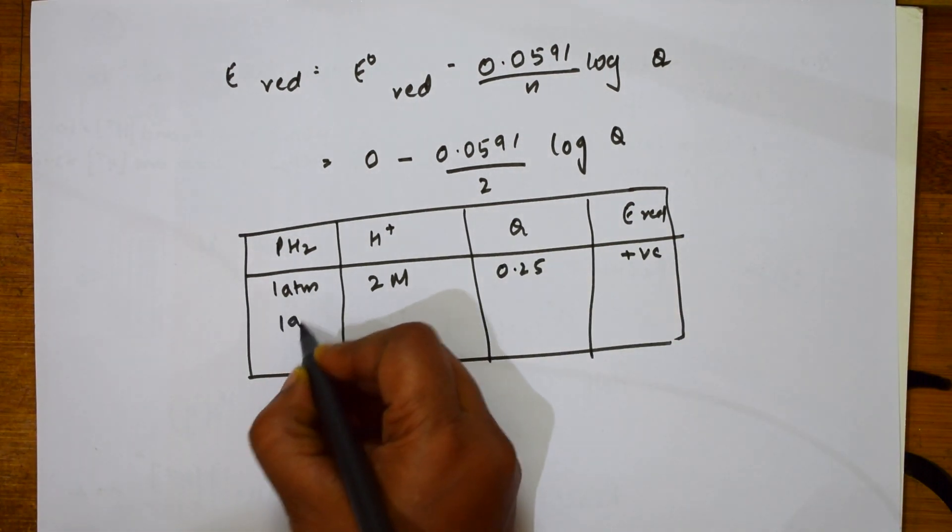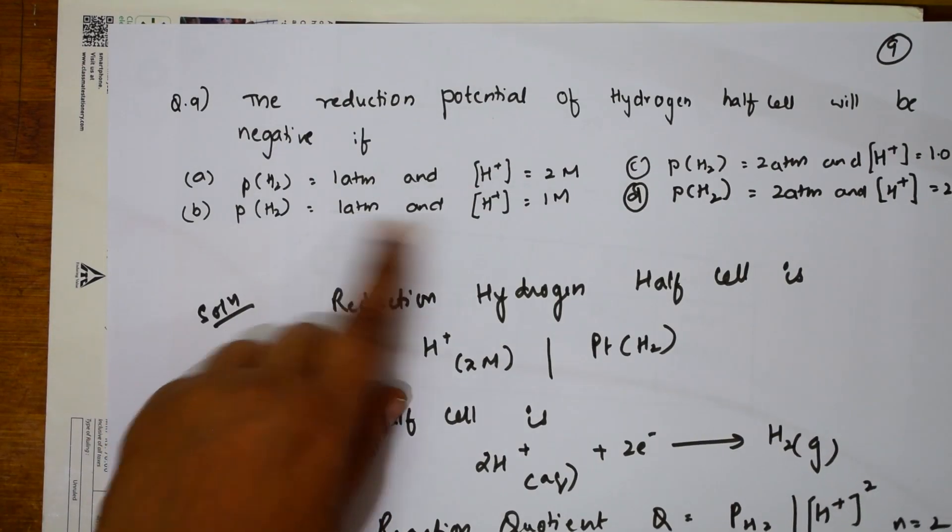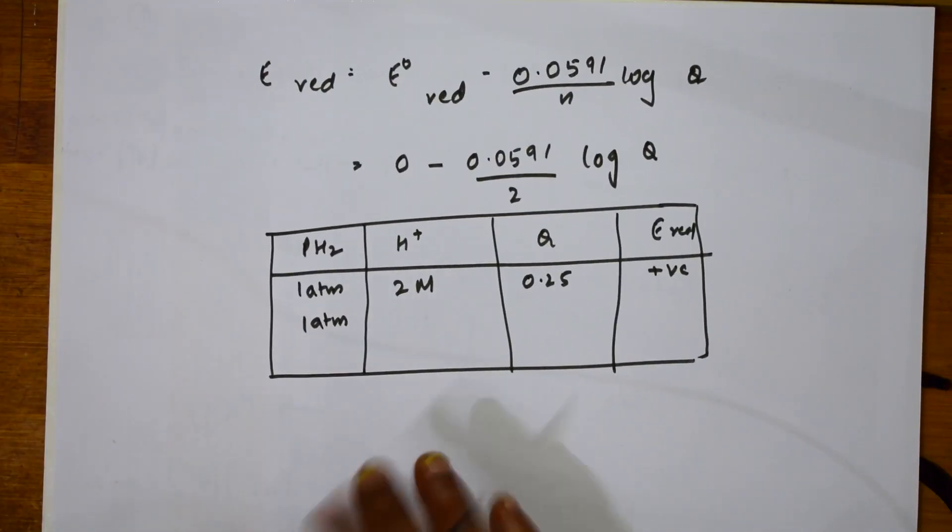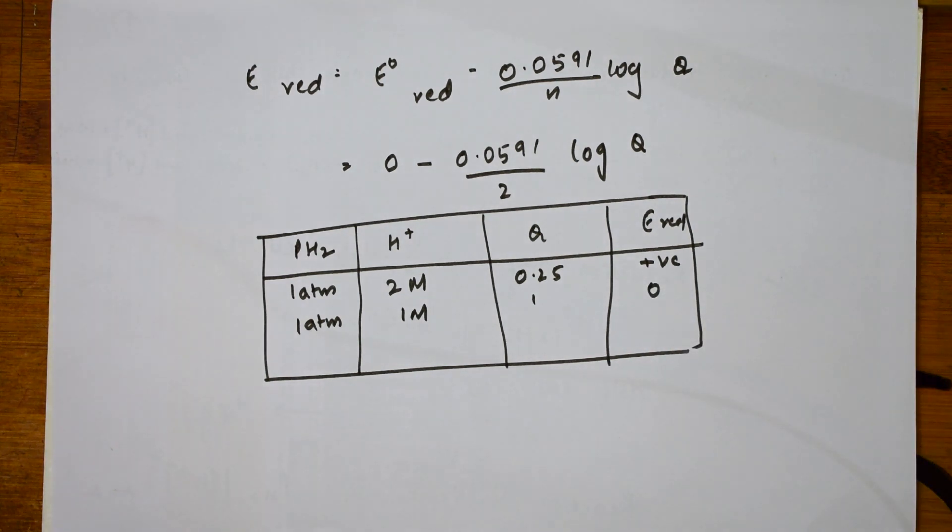PH2, second case, 1 atmosphere. Second B is 1 atmosphere, 1 molar. This is Q value 1. This is 0.